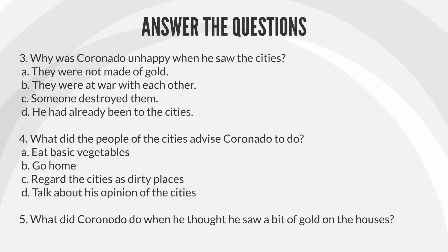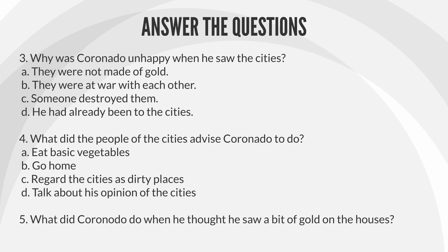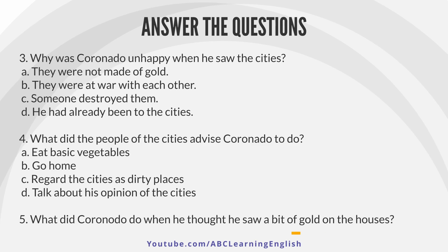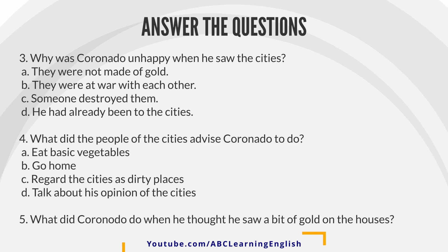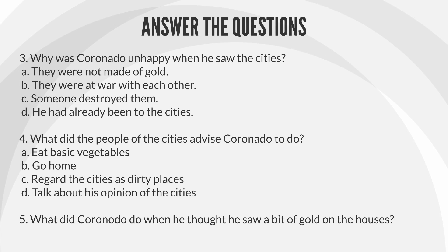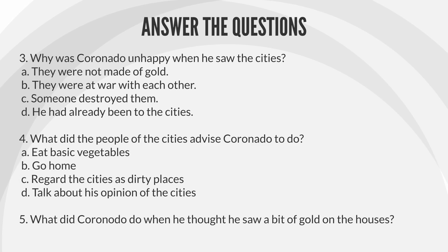3. Why was Coronado unhappy when he saw the cities? A. They were not made of gold. B. They were at war with each other. C. Someone destroyed them. D. He had already been to the cities.